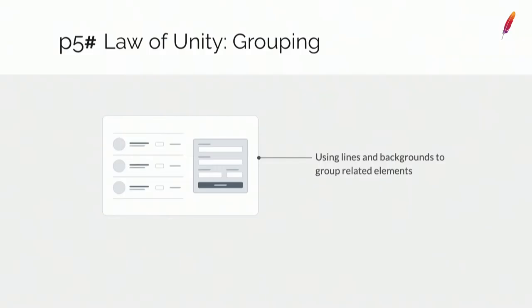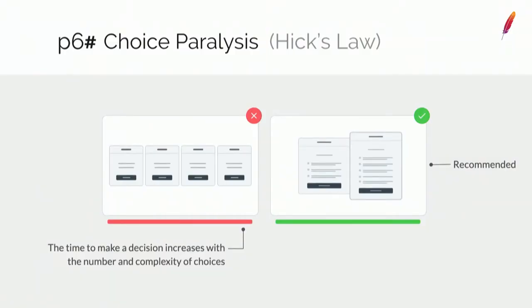Here is an example of how you can use lines and borders to group form elements on a screen. Choice paralysis states that users may become paralyzed when they see many similar items and don't know how to compare them. Hick's law says that the time to make a decision increases with the number and complexity of choices.